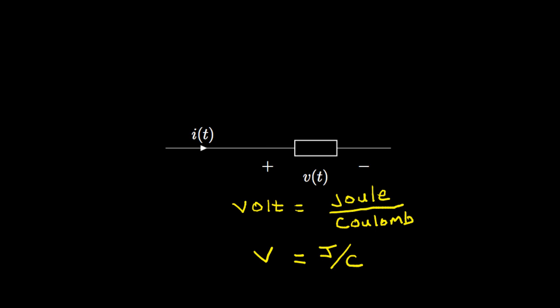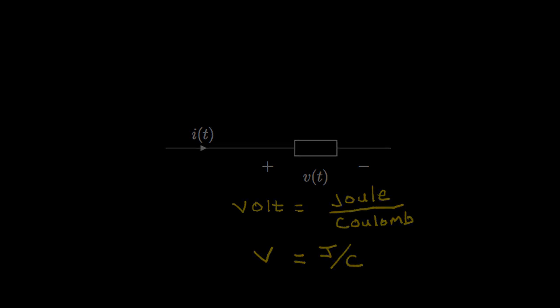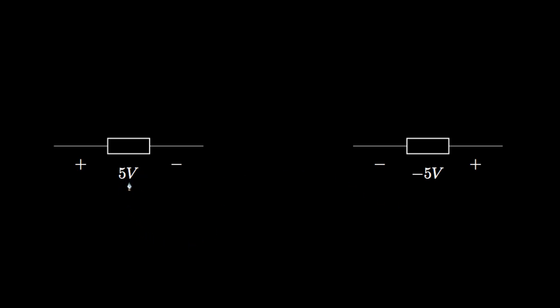The relationship between current and voltage is determined by the physical characteristics of the electrical device. A voltage drop of 5 volts from left to right across a device could be denoted in two equivalent ways. The value for voltage tells us how much the voltage increases or decreases across the device, and the polarity symbols — the plus and minus signs — tell us the direction of that increase or decrease. On the left, the voltage increases by 5 volts from the minus sign to the plus sign; on the right, the voltage decreases by negative 5 volts from the minus sign to the plus sign.